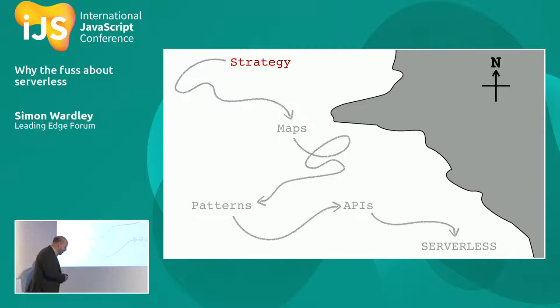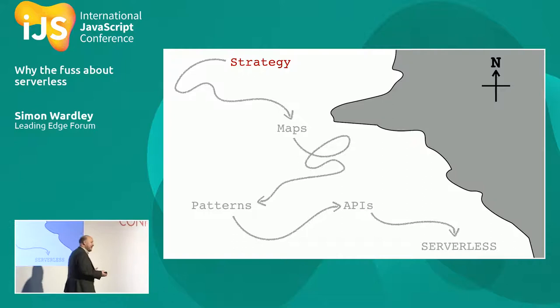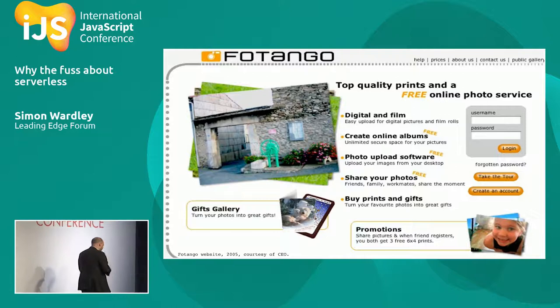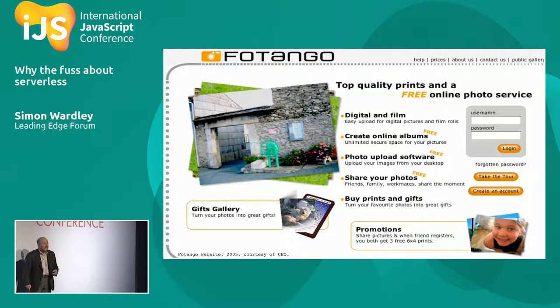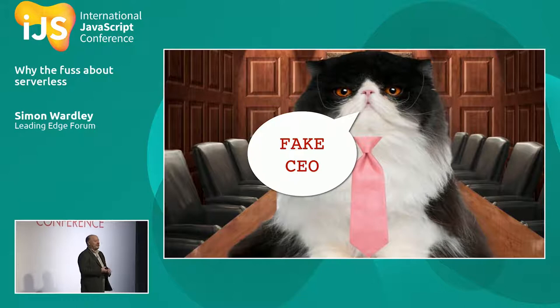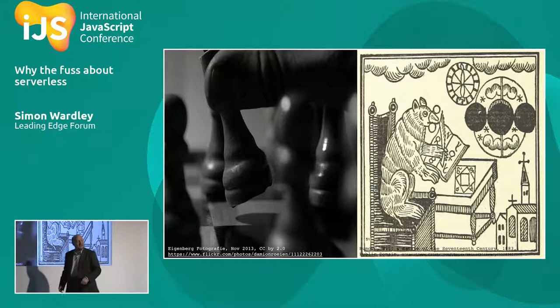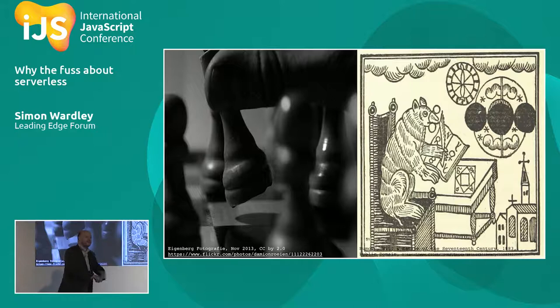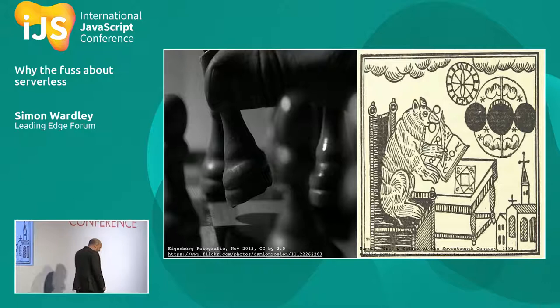This is a long story — it starts back in 2005. I was CEO of a company called Fotango, an online photo service, heavy users of open source. But Fotango had a problem: the CEO — me. I didn't have a clue what I was doing. I was making it up as I went along. I wasn't some chess-playing master running this company; I was an alchemist. Gut feel. We were profitable, revenue was growing, we were doing exciting stuff — I just didn't know what I was doing.